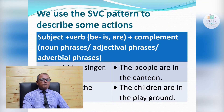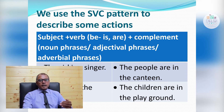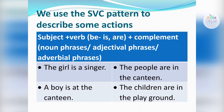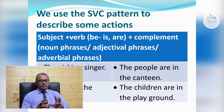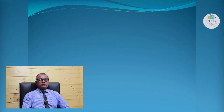We also use the SVC pattern — Subject, Verb, Complement — to describe some actions and states. For example: 'The girl is a singer', 'The people are in the canteen', 'The boy is at the canteen', 'The children are in the playground.' We can also use noun phrases, adjectival phrases, and adverbial phrases in the SVC pattern.